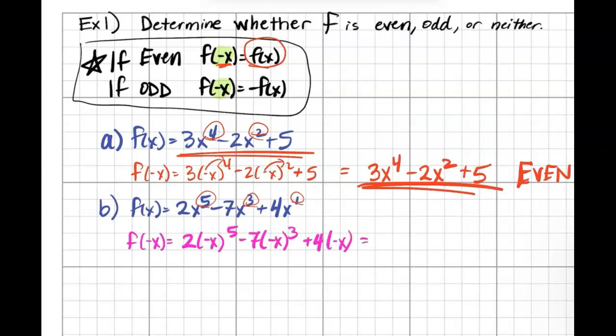So if I plug in negative x to the 5th, the odd exponent is going to keep that negative, so I'm going to bring that in front and call it negative 2x^5.